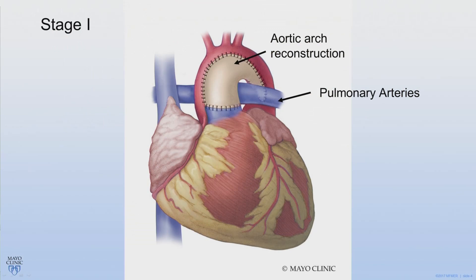Stage one, commonly called the Norwood, has several components. First, the aortic arch is reconstructed, so now the single ventricle has an unobstructed outflow to the head and the rest of the body. This is done by combining the aorta and the main pulmonary artery and patching the aortic arch. You can see that in this diagram, the pulmonary arteries are not connected to anything, so next we need to provide the lungs with blood flow.